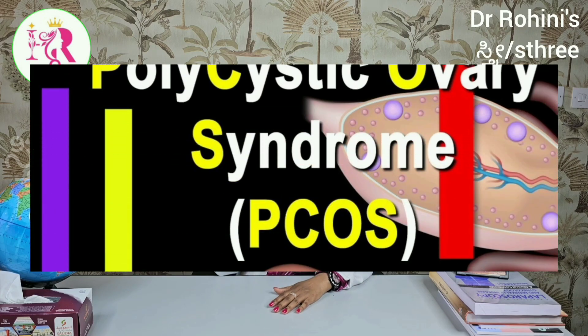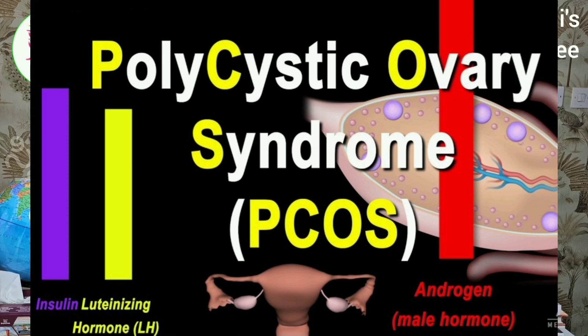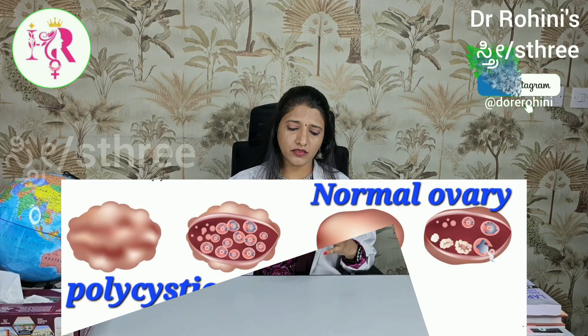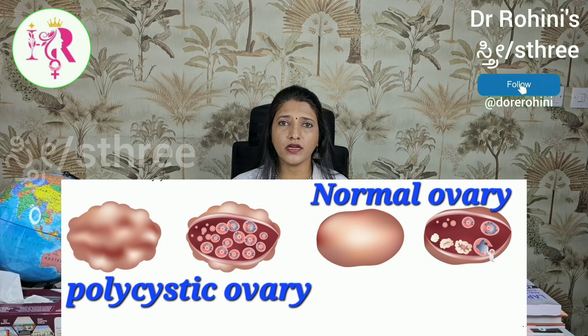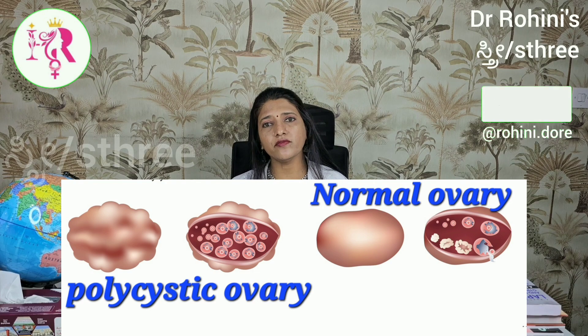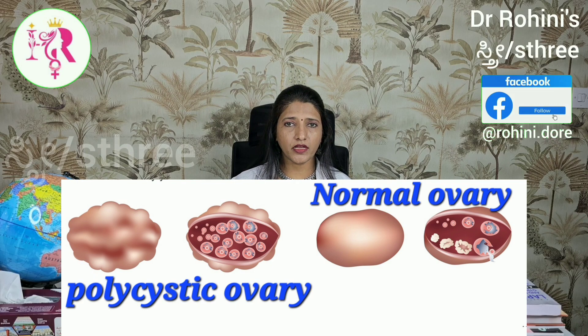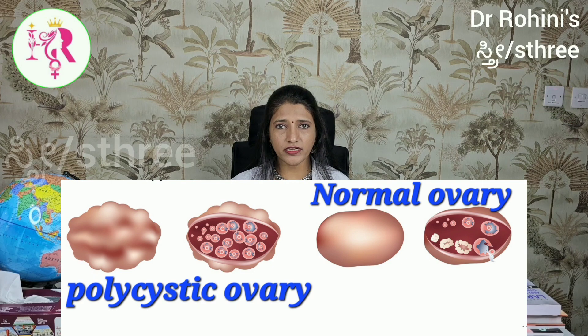The sustained increase in LH levels in the ovary in turn increases the production of androgen hormones and testosterone. When these androgen hormones within the ovary are increased, that affects the normal growth and maturation of the follicles and the growth of the eggs inside those follicles. The growth of these eggs is not complete, which affects the quality of the eggs. Those eggs get collected within the ovary itself.